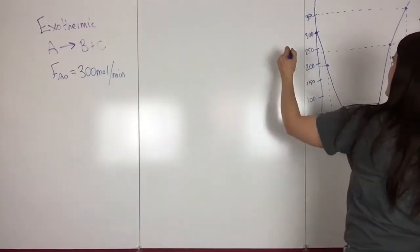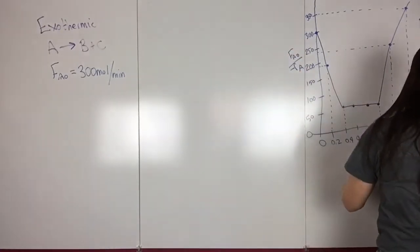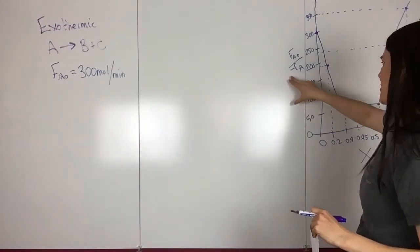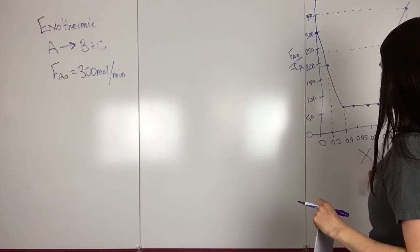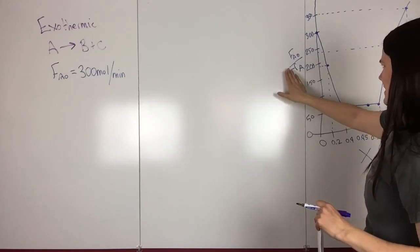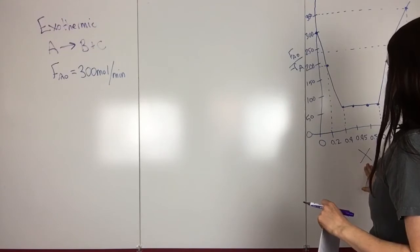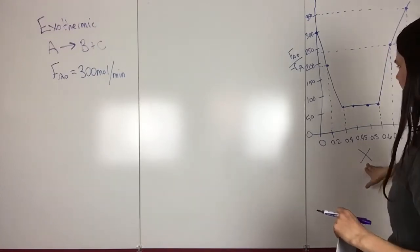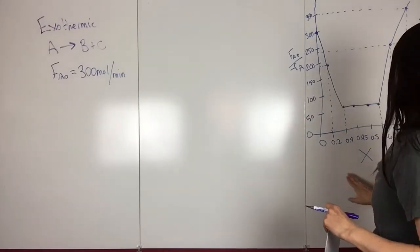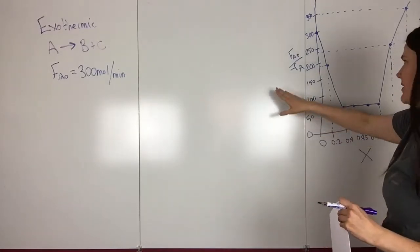So this is the plot we get. So this is FA0 over -RA versus X. You want to be careful with these because sometimes only 1 over RA is plotted by X. And so then to get the volume, the way I have this plotted here to get the volume, it's just this multiplied by this. But for a CSTR anyway, but sometimes the plot will just be 1 over the rate by X. And so then you would need to also multiply everything by FA0. So just keep that in mind.